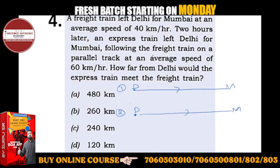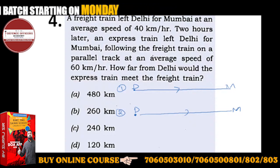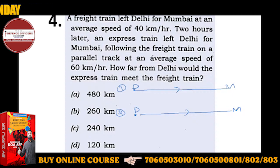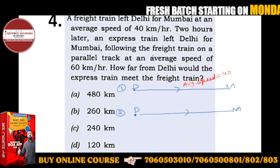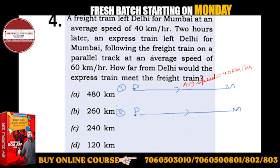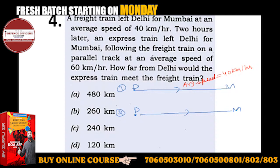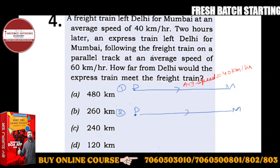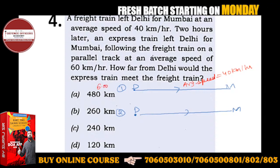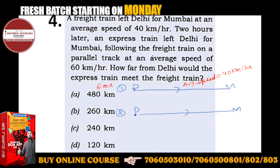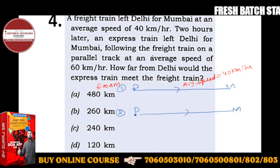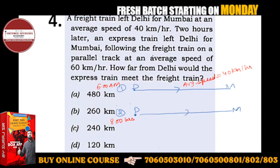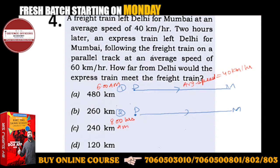What's given to us is the average speed. The average speed is 40 km per hour. Now don't get confused by 'average speed' — it just means the speed can vary along the journey. So the train may not travel at a constant speed throughout.